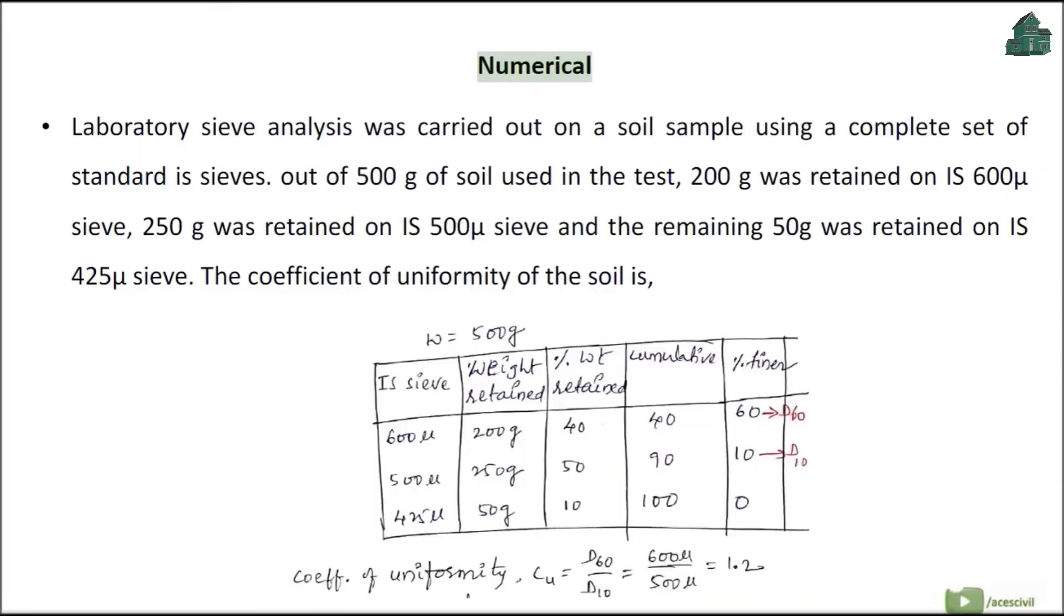Numerical: Laboratory sieve analysis was carried out on a soil sample using a complete set of standard IS sieves. Out of 500 grams of soil used in the test, 200 grams was retained on IS 600 sieve, 250 grams was retained on IS 500 sieve, and the remaining 50 grams was retained on IS 425 sieve. The coefficient of uniformity of the soil is...